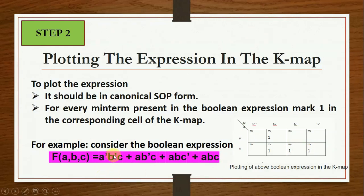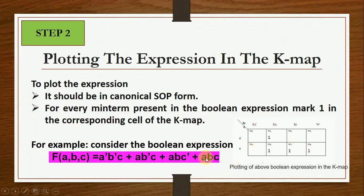For A-bar B-bar C: A-bar is the top row, B-bar C is the corresponding column, so we place 1 at their intersection. For A B-bar C: A is the bottom row, B-bar C is the column — place 1 there. For A B C-bar: A row and B C-bar column — place 1 at the intersection. For A B C: A row and B C column — place 1 there. Alternatively, you can draw the truth table, find the minterm numbers, and place 1s accordingly.